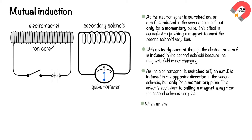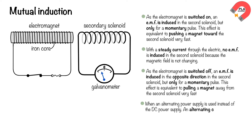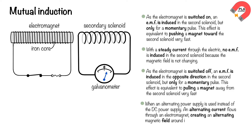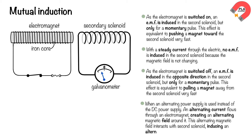When an alternating power supply is used instead of the DC power supply, an alternating current flows through the electromagnet, creating an alternating magnetic field around it. This alternating magnetic field interacts with the second solenoid, inducing an alternating EMF in it.